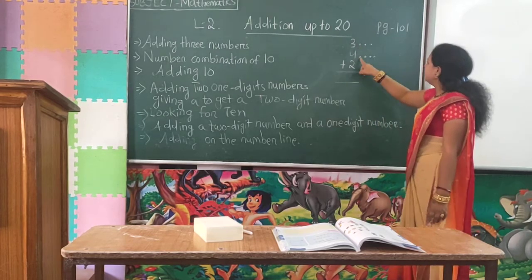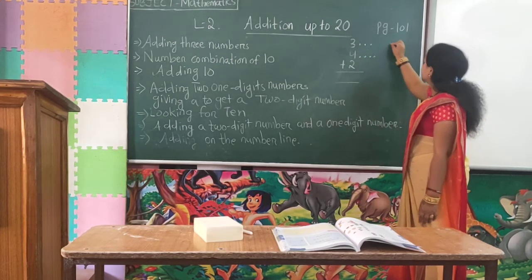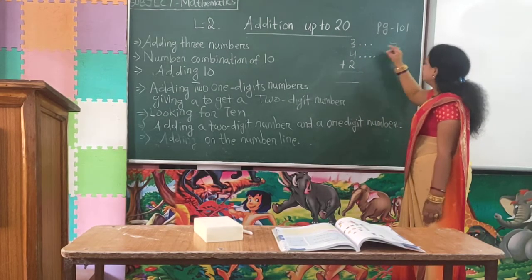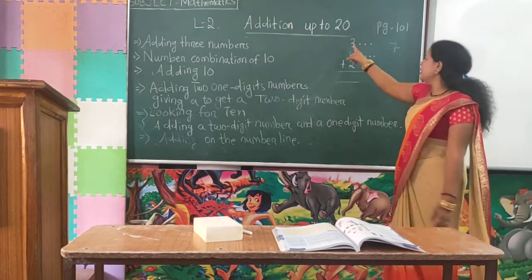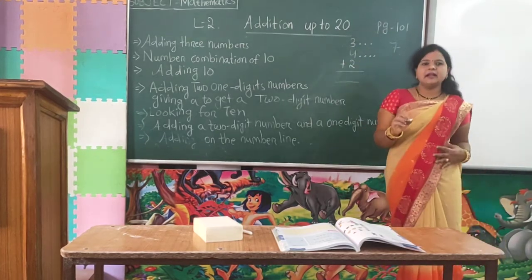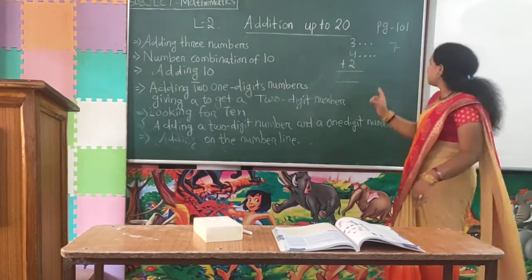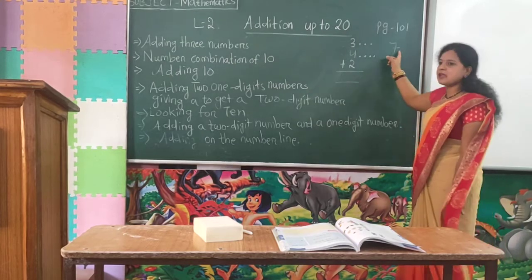Counting: 1, 2, 3, 4, 5, 6, 7. The answer is 7. When we add 3 and 4, we get 7.